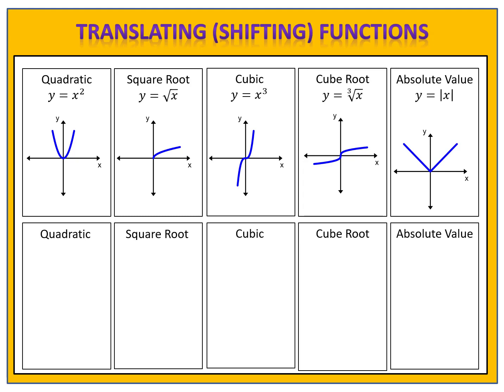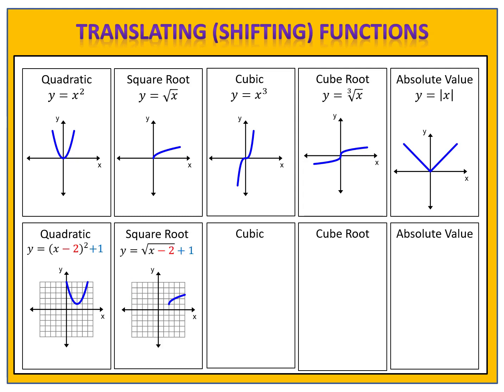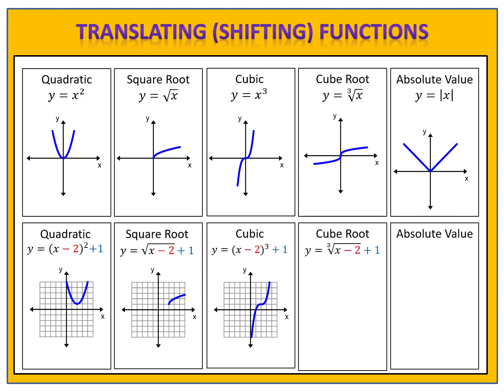We can combine these things — shifting left, right, and up or down at the same time. We've seen that before in the quadratic. In this one, y equals x minus 2 all squared plus 1, our function would move right 2 and up 1 unit. Notice when we follow that same process in the other functions, the behavior is similar. The parent function shifts 2 to the right and 1 up.